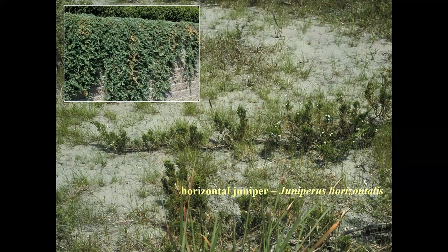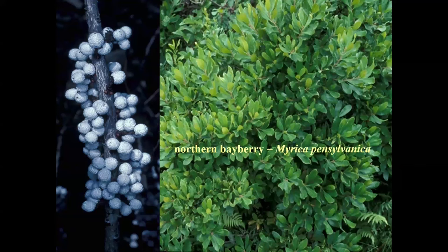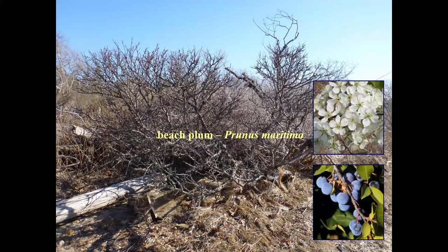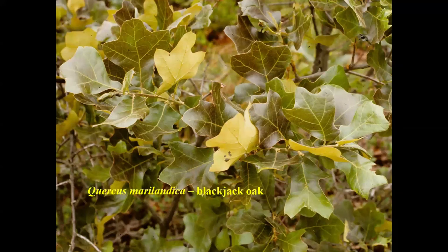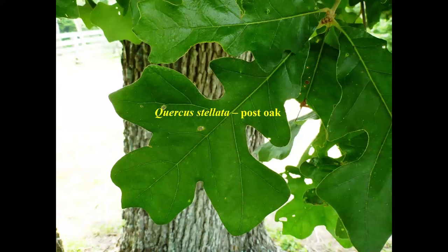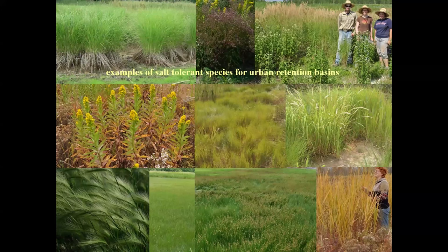Horizontal juniper — you know it as a horticultural selection, but it's a really neat plant in its native habitat. Northern bayberry — now renamed Morella. Beach plum — one of the most neglected native plants. Excellent in flower, very salt tolerant. The fruit is small, about the diameter of a thumbnail, but makes great cordials, jams, jellies, and pies. Eastern red cedar — growing on the waste beds before they were reclaimed, at pH 8 to 12 within 12 inches of substrate. Blackjack oak and post oak are found on Long Island and are probably hardy here, so we ought to be trying them. For retention basins or roadside medians, these are some of the species you might consider.